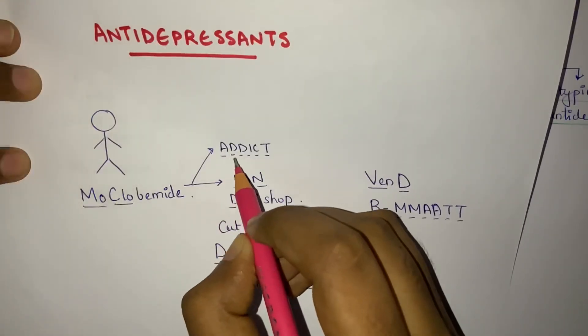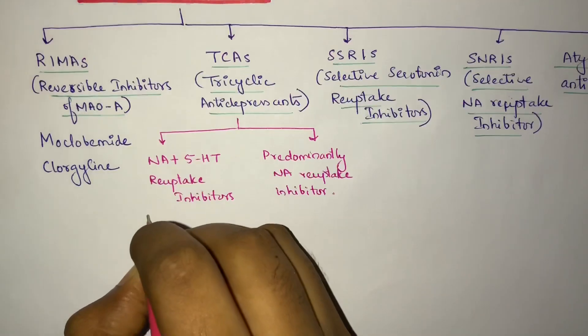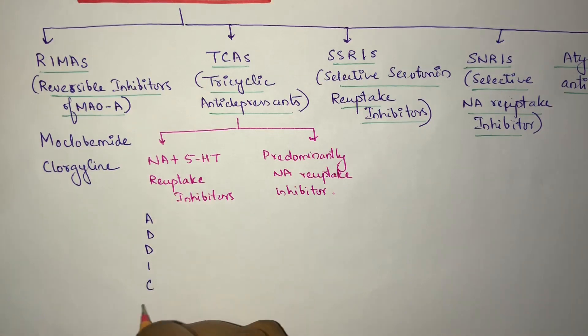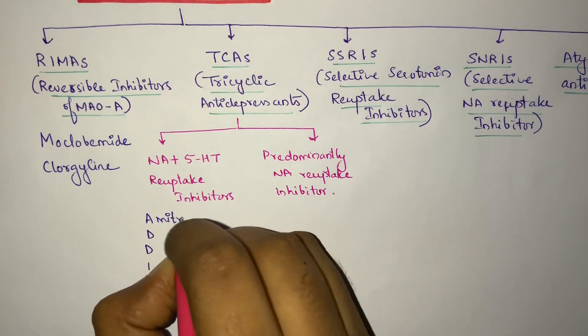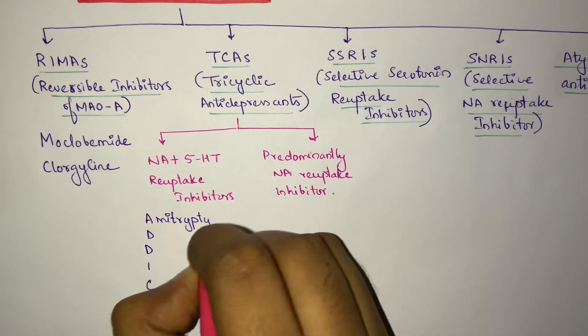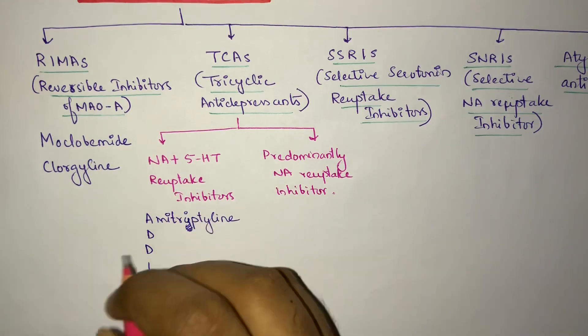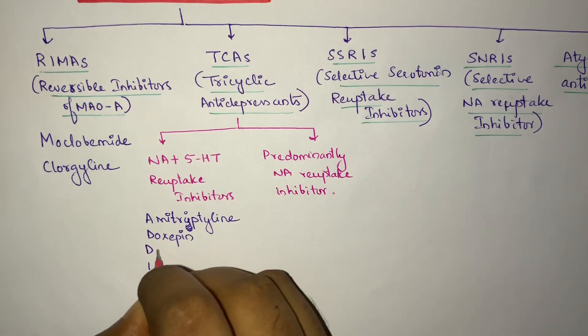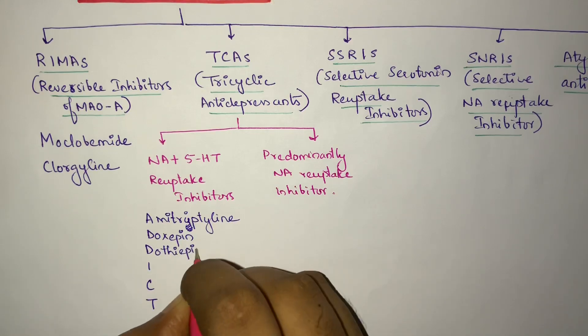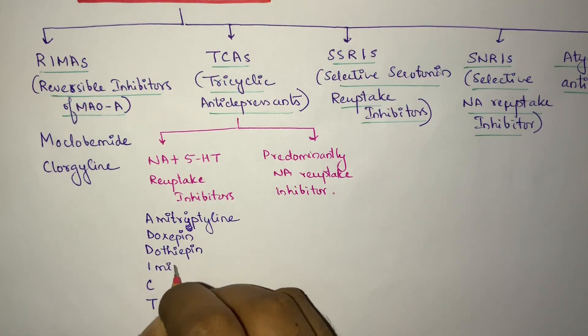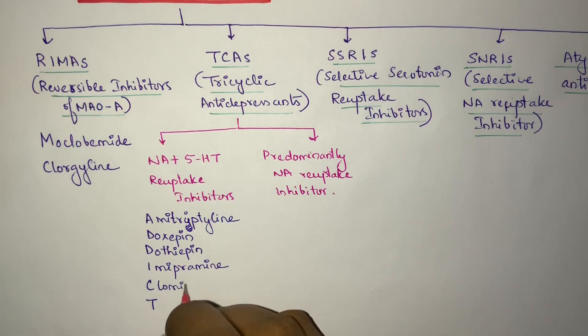So back to the mnemonic: ADDICT. A-D-D-I-C-T. A for Amitriptyline, D is for Doxepin, D is for Dothiepin, I for Imipramine, C for Clomipramine, and T for Trimipramine.